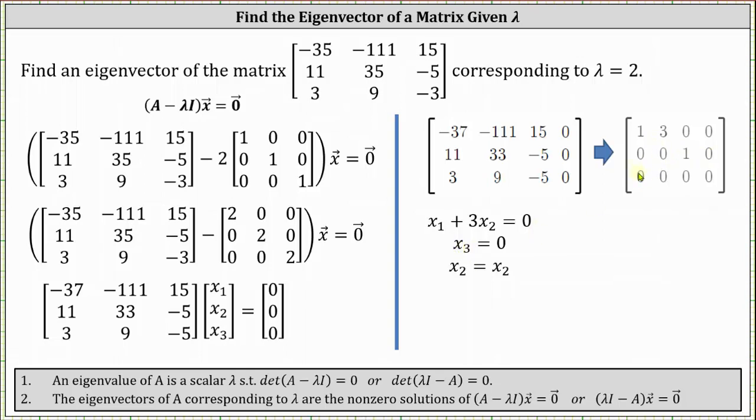Because x₂ is a free variable, we can parameterize the solution by letting x₂ = t. If x₂ = t, then x₁ = -3t and x₃ = 0.